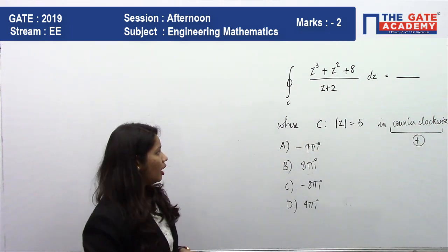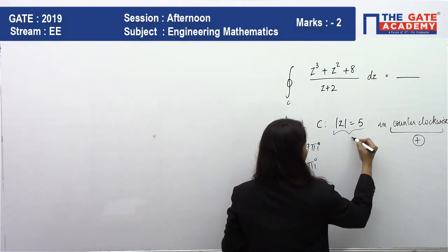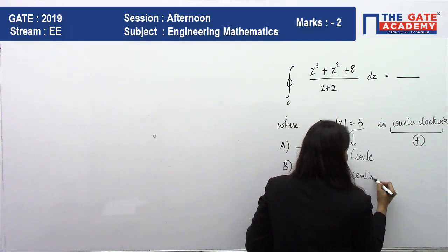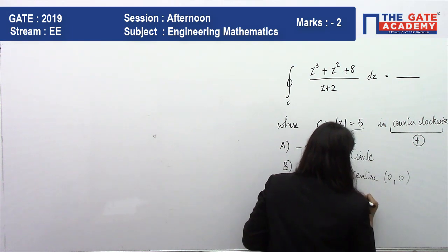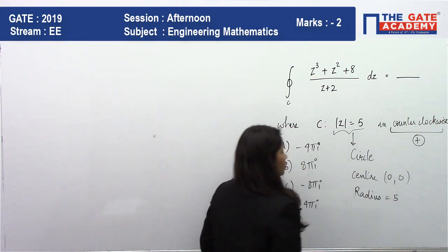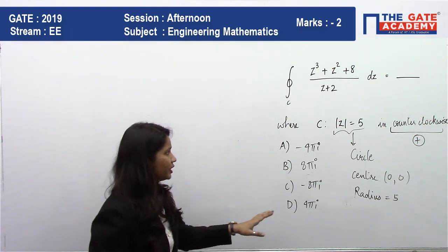Now this |z| = 5 is nothing but a circle, which circle having center at (0,0) and radius as 5 units. So this circle has center at (0,0) and radius as 5 units.